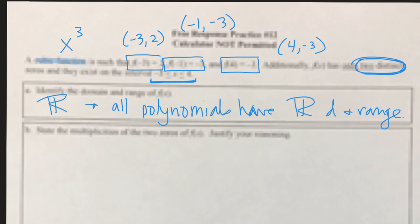You can cube any number; you can raise any number to the fifth power. You have all possibilities when doing polynomials. So the domain and range are all reals because it is a polynomial — because it's a cubic. No other reason whatsoever other than the fact that it's a polynomial.